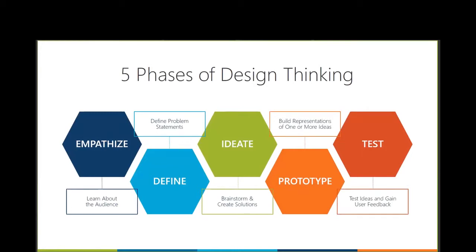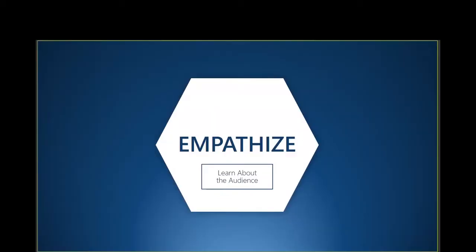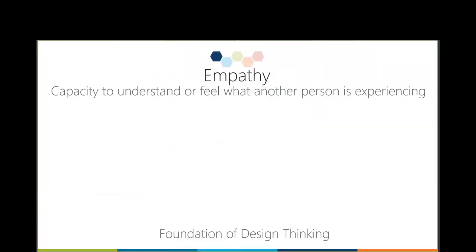We start first with empathy, where we learn about our audience. We then move into define, where we're defining the problem statements based on what we've learned during the empathy phase. We then move into the ideation phase, where we brainstorm and create solutions based off of the problem statements. Then we move into the prototype phase, where we create quick prototypes of one or more representations of the ideas. And then we move into the test phase, where we test our ideas and gain user feedback. Empathy is defined as the capacity to understand or feel what another person is experiencing from within their frame of reference.